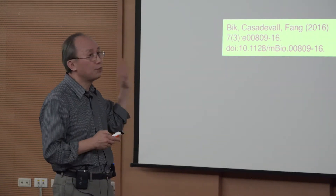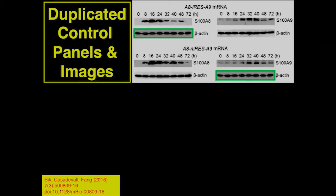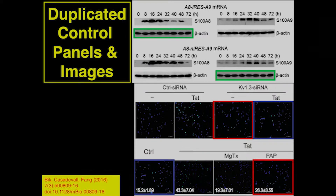This is very important: you cannot duplicate a control. For example, a beta-actin loading control — everyone who runs westerns knows about this — where an author took one strip and placed it alongside a completely different set of experiments. That is not acceptable. The control must be done on the same day, same gel, same reagents. Some people also just reuse a panel from one experiment in a second experiment. That is duplication and it is not allowed.